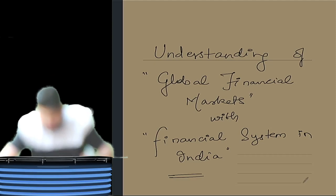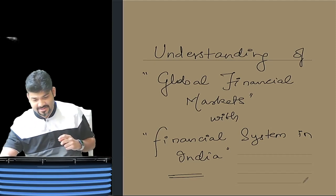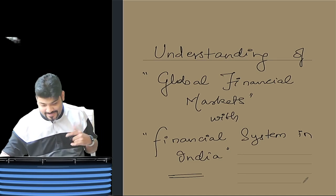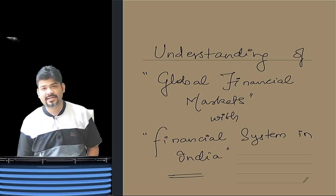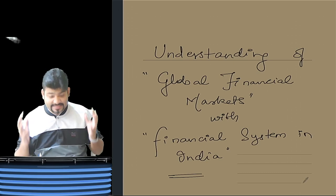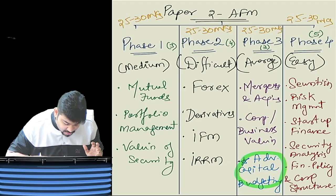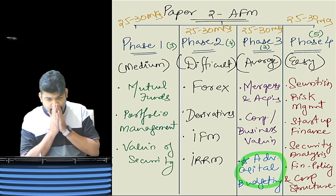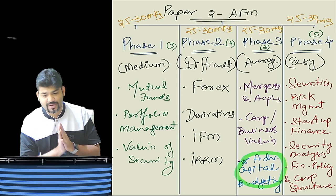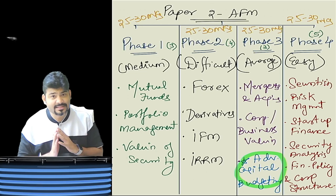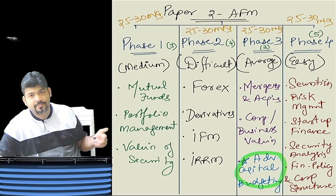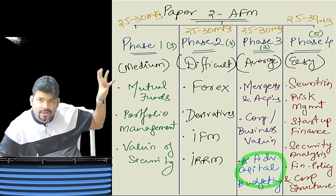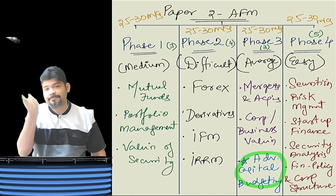Welcome to this session on Advanced Financial Management. Let's continue from where we left yesterday. We gave a brief overview of what the subject is about. We've divided the whole subject into four phases. Phase one will consist of mutual fund portfolio management and valuation of security — a medium level topic covering 25 to 30 marks for sure.